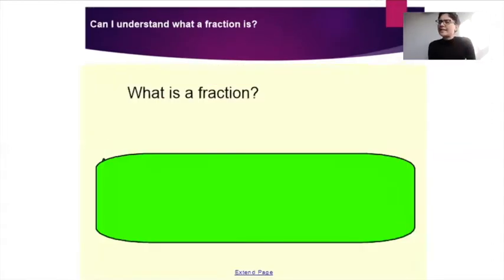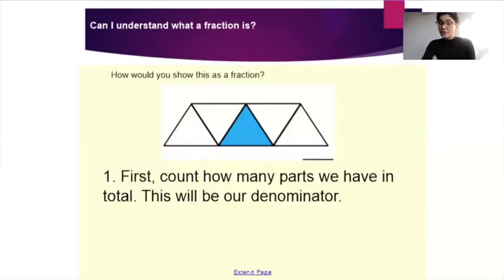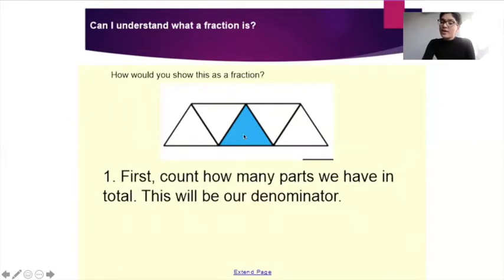Have a little think to yourselves — what is a fraction? A fraction shows us a certain amount of parts of a whole. What we do first of all is count how many parts we have in total — this will be our denominator. So how many parts has this shape been divided into? One, two, three, four and five. So our denominator would be five.